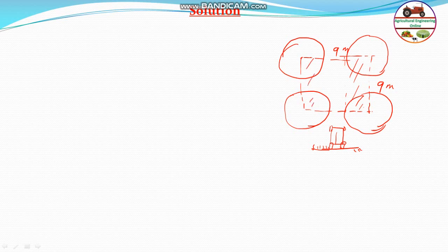Here, the velocity of the spraying - the velocity is given as V = 3 kilometers per hour, which can be converted to meter per second, that is 3 divided by 3.6 meters per second. The plant-to-plant spacing is 9 meter, so it covers from one tree to another tree.